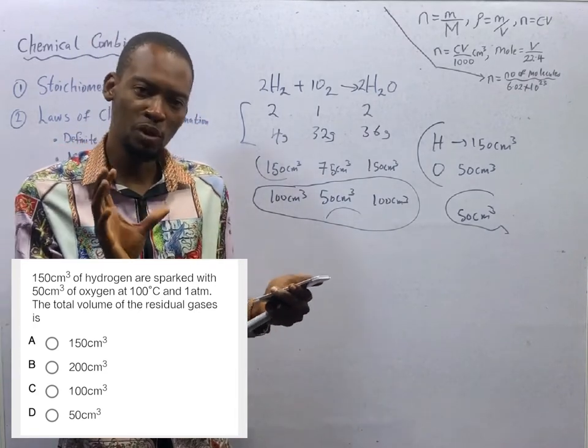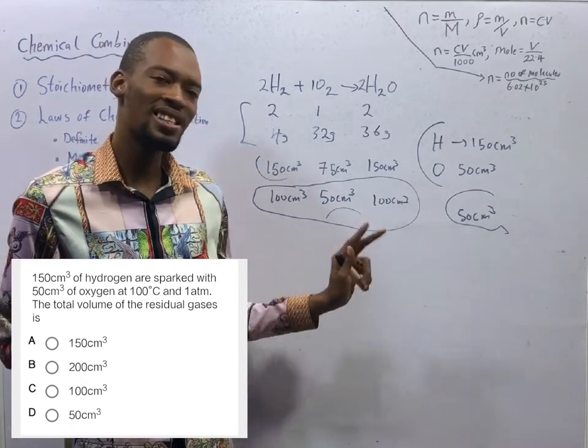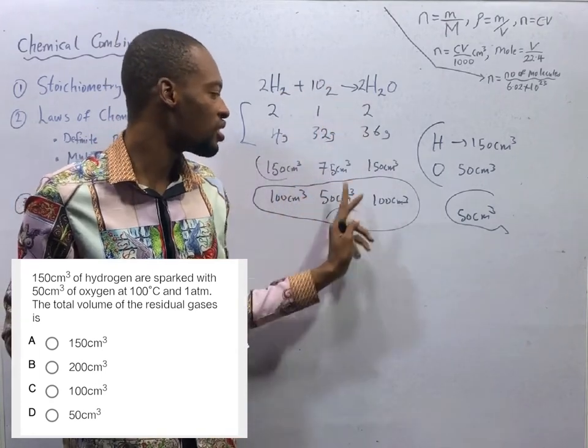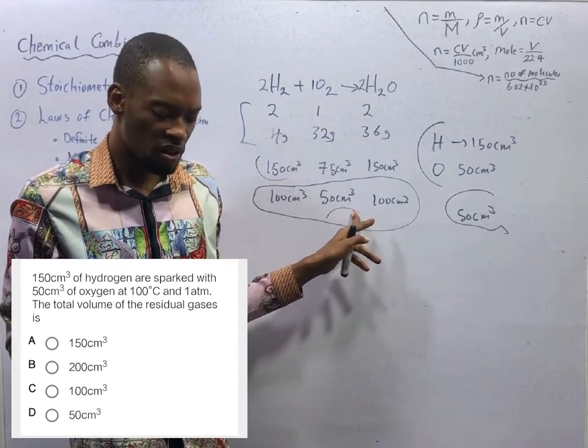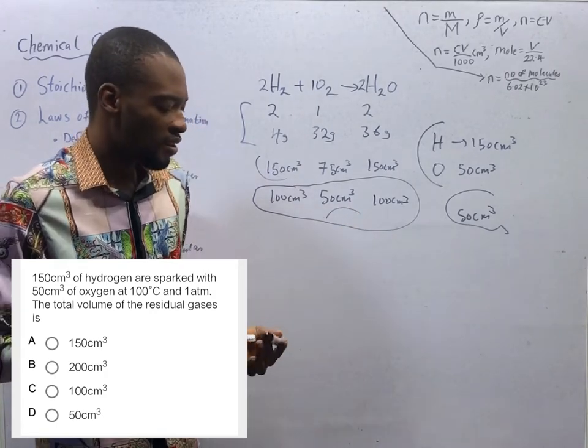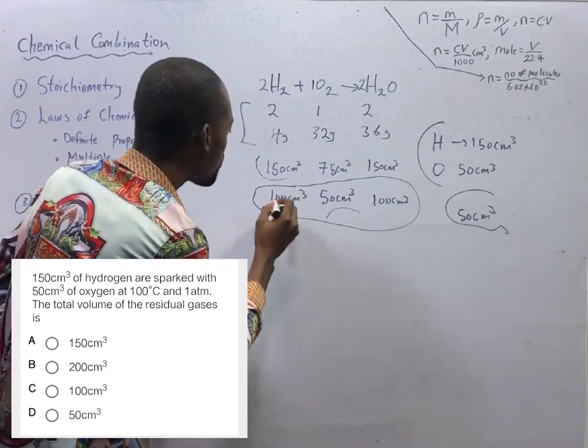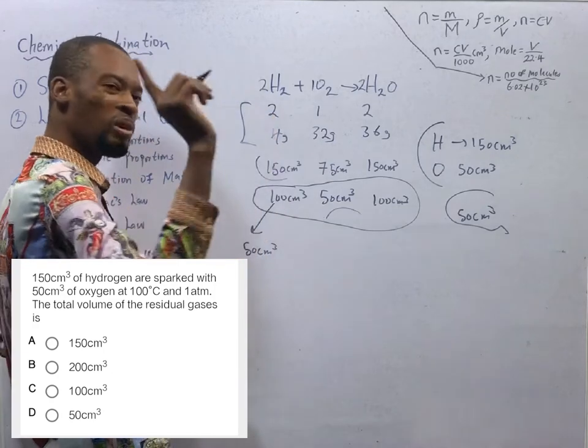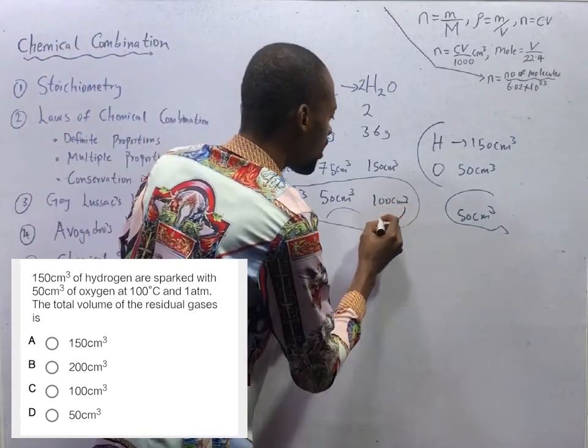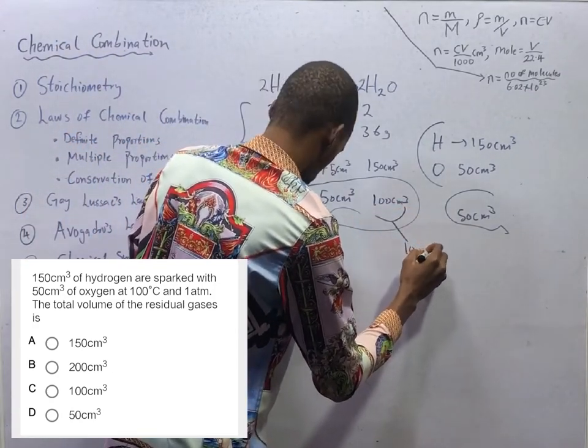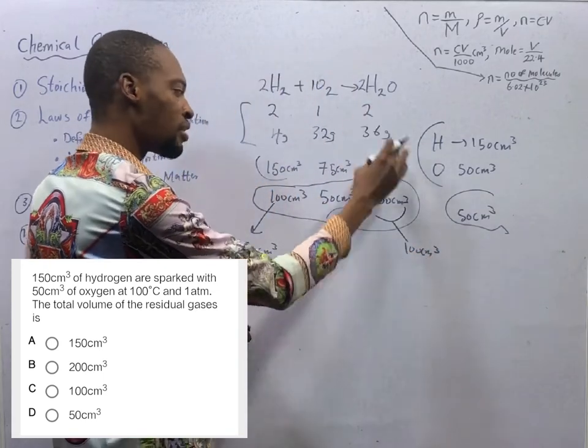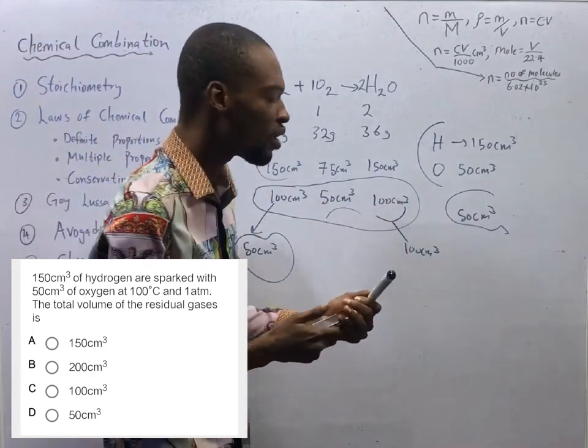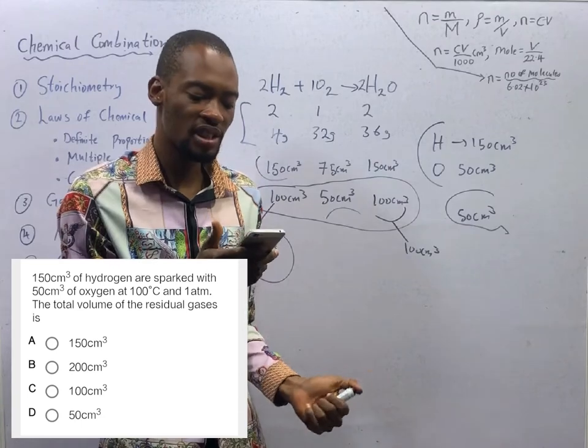What they are asking us is the volume of the residual gas. First, there are possible questions they can ask you from here. What is the excess reagent? Hydrogen. What is the limiting reagent? Oxygen, the one that is not enough. Now, the volume of the residual gas is the hydrogen remaining that did not react at all, and we got it to be 50 cm³, plus the product formed, 100 cm³. So, 100 cm³ the product formed plus the volume that did not react is the volume of the residual gas, and that is 150 cm³.